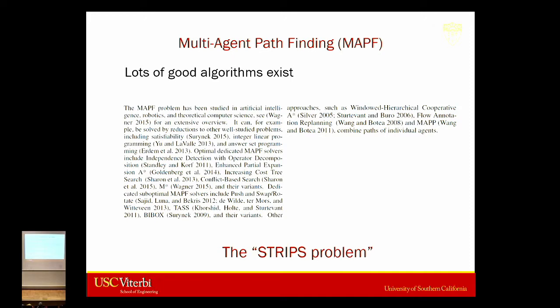The problem that we have in our group — and I think many people here think this way too — is that when we're given an optimization problem, we develop better and better algorithms for it, but we very seldom stop and ask ourselves: is that really the right problem to solve? And if you really need to do this on robots, how do we actually do that? That's basically what this paper is all about.